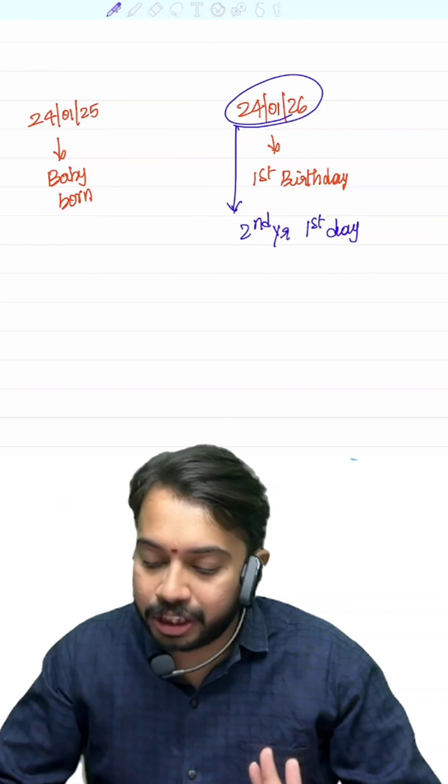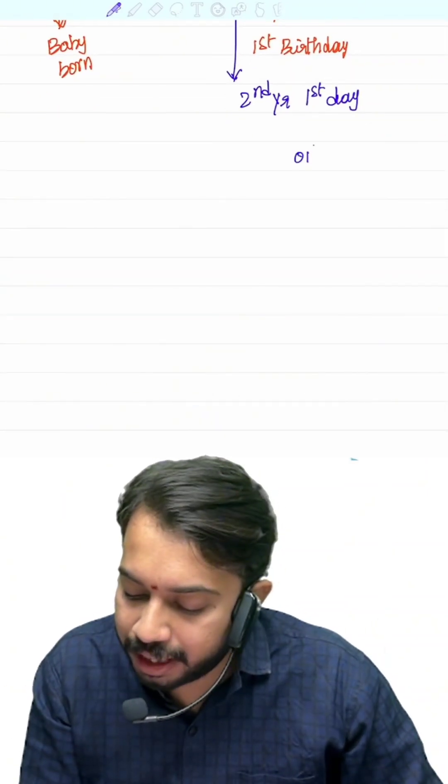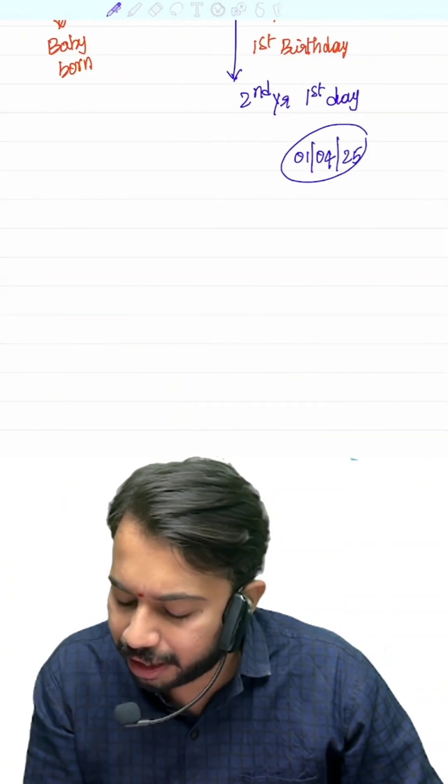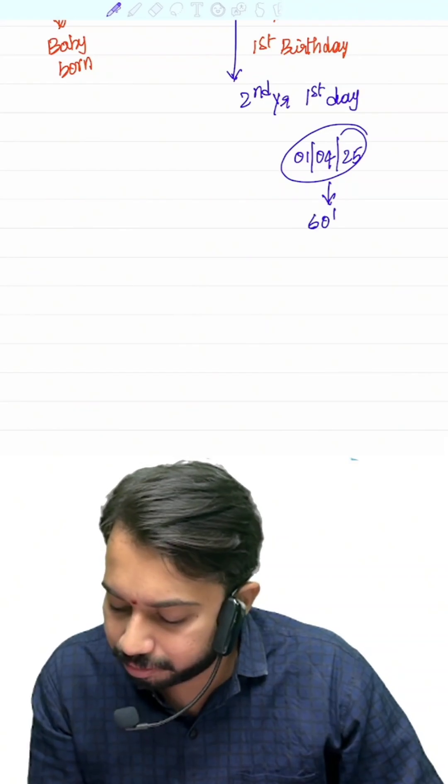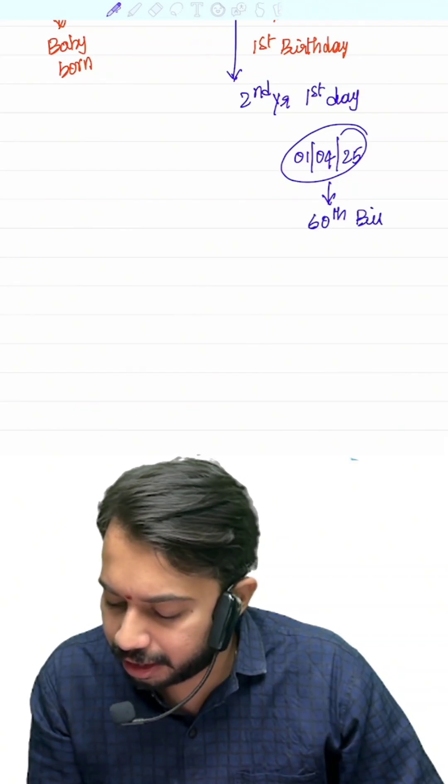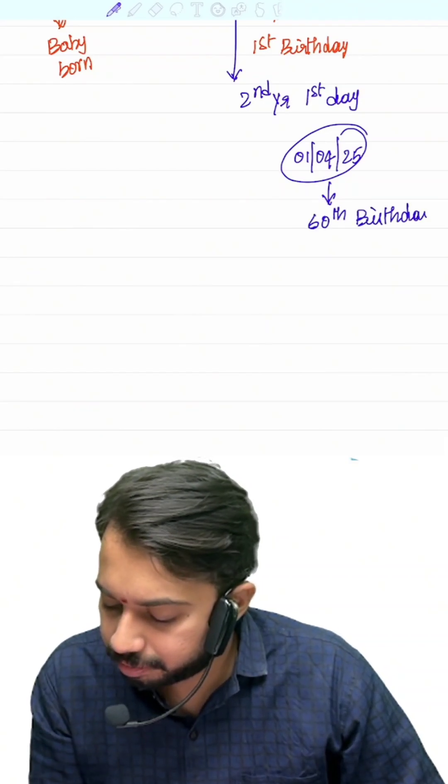Apply the same logic. Individual celebrating his 60th birthday on 1st April 2025. 60th birthday.